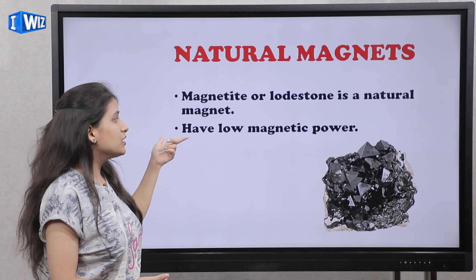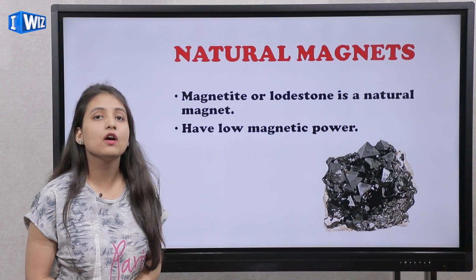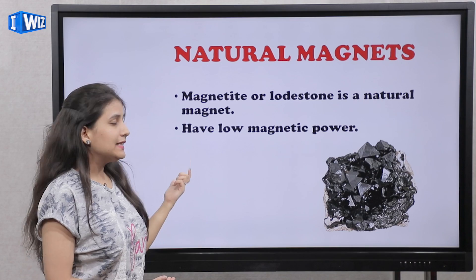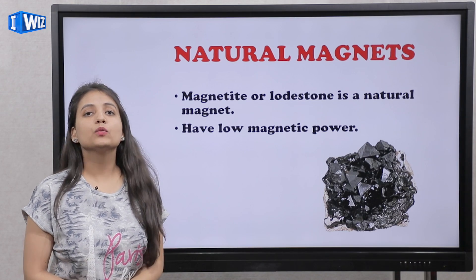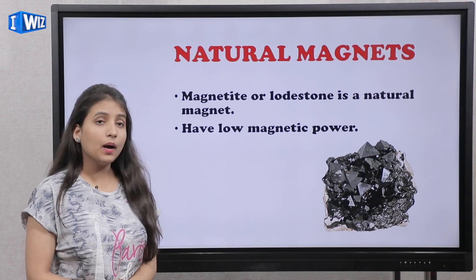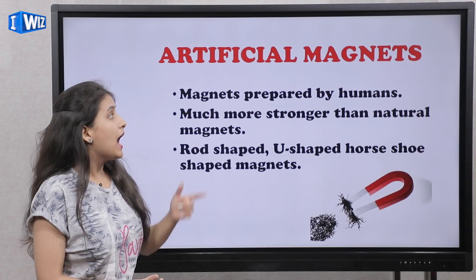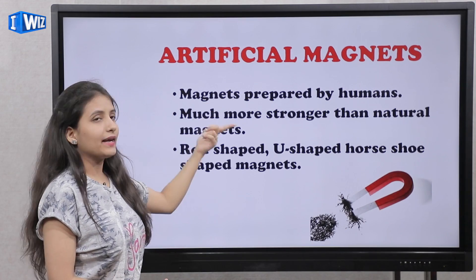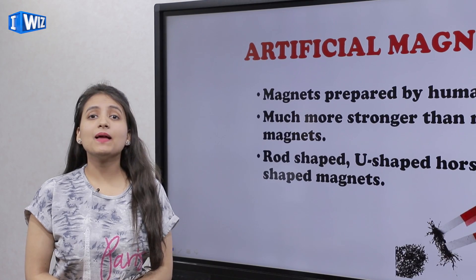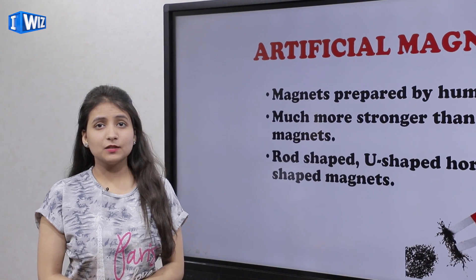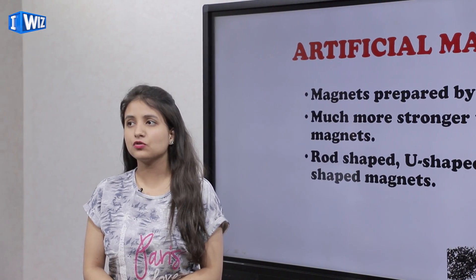The natural magnets are made by magnetic power, but their power is low. In earlier times, natural magnets were used. But now we use artificial magnets. Artificial magnets are man-made magnets made from natural magnets. In comparison to natural magnets, artificial magnets are stronger.